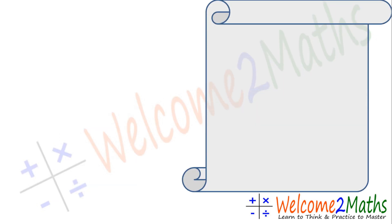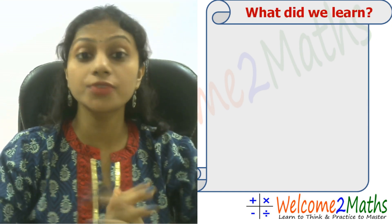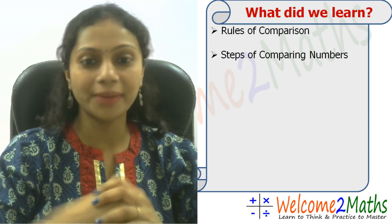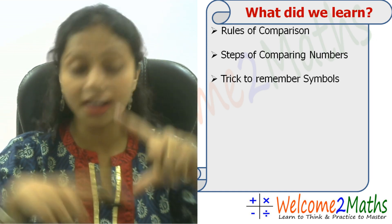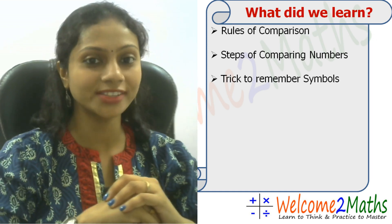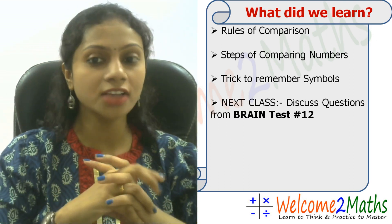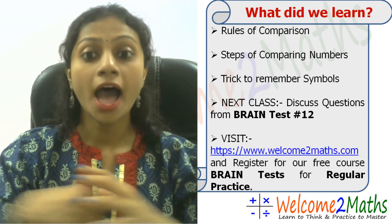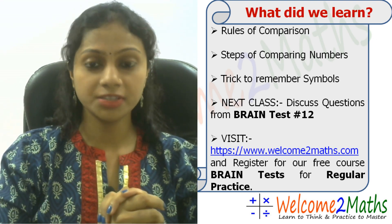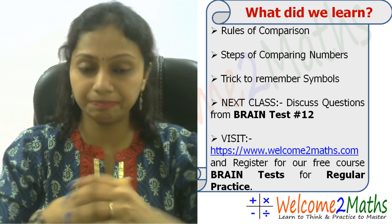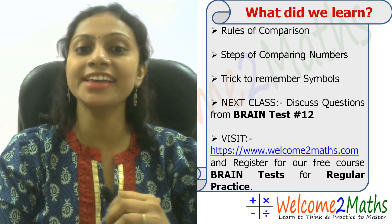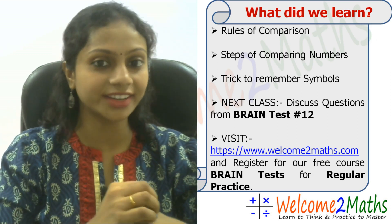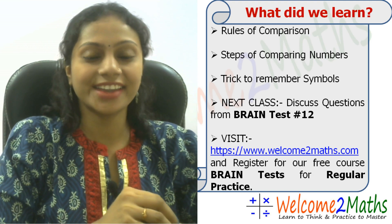Before we end today's class, let's recap what we learned: the rules of comparison of numbers, the steps for comparing numbers, and the easy trick to remember greater than and less than symbols. In our next class we will discuss questions from brain test number 12 for class 2 and class 3. Visit our website and register for the pre-course brain test. That's all for today — take care and bye bye!